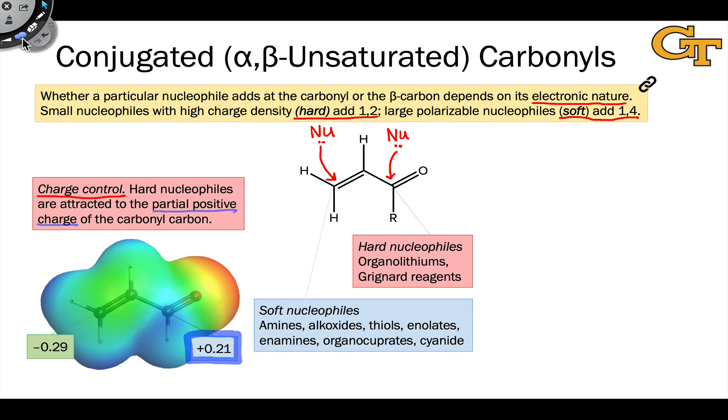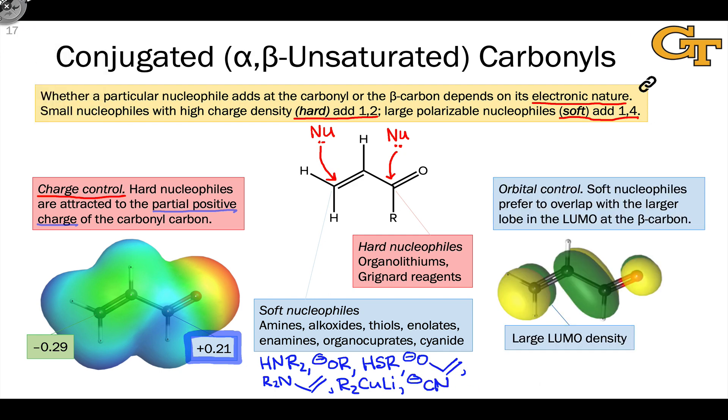Soft nucleophiles are associated with less partial negative charge, and these are things like amines, alkoxides, thiols, enolates, delocalized negative charges, enamines, organocuprates, and cyanide. The reactivity of the soft nucleophiles is really driven by orbital control.